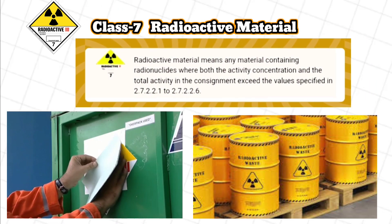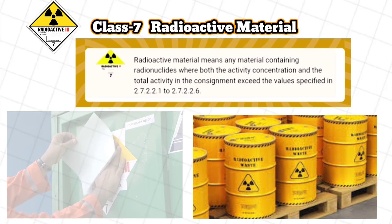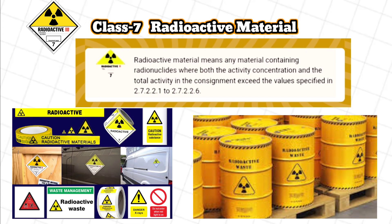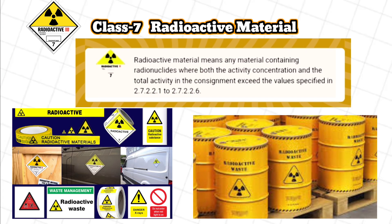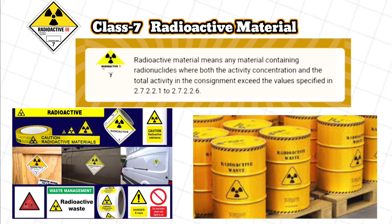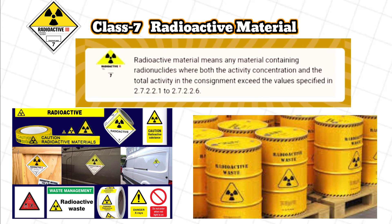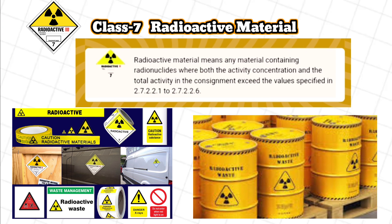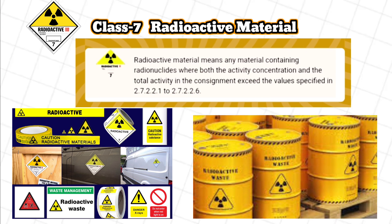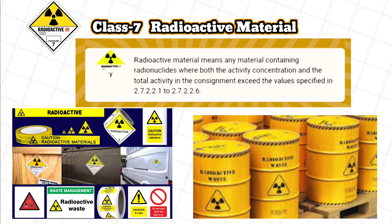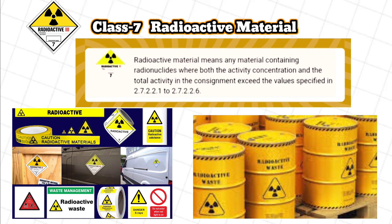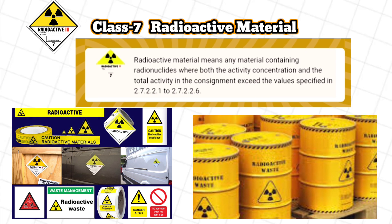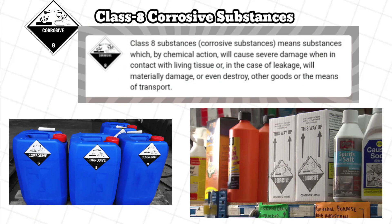Class 7, Radioactive material: radioactive material means any material containing radionuclides where both the activity concentration and the total activity in the consignment exceed the values specified in paragraphs 2.7.2.2.1 to 2.7.2.2.6.